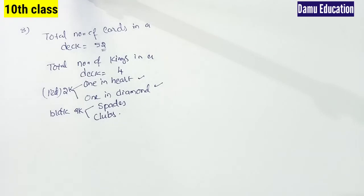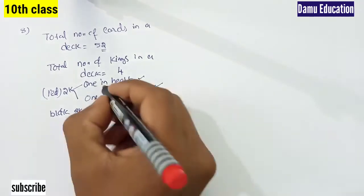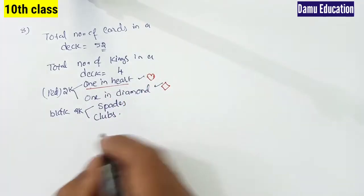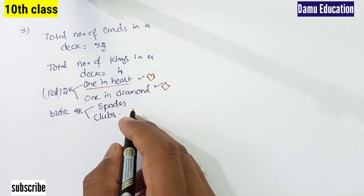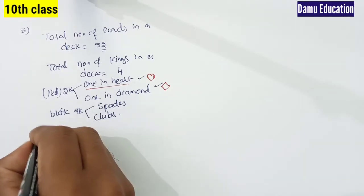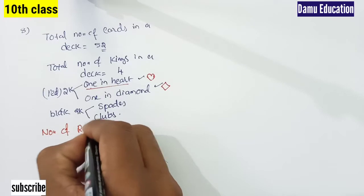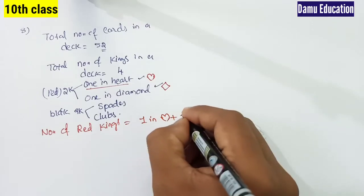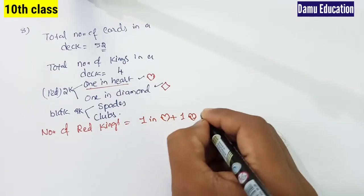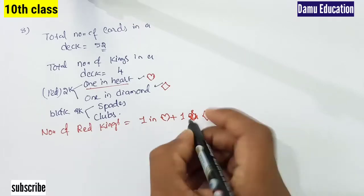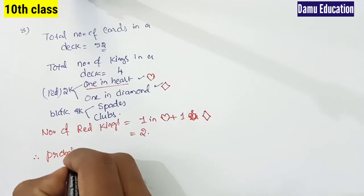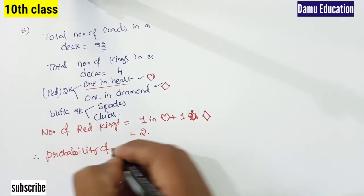So the number of red kings is one in hearts plus one in diamonds, giving us a total of two red kings.